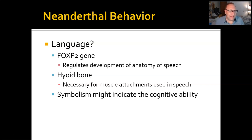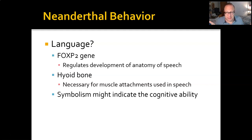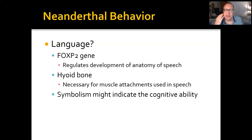Direct evidence is that they have a floating hyoid bone like ours. You need that hyoid bone for muscle attachments that control the larynx and allow you to make the range of sounds that you do. The other key piece of evidence is they have a version of a gene called FOXP2, which regulates the anatomical and neurological development of speech. They have the same version modern Homo sapiens have. No other mammal has this, as far as we know — we are the only two. Language requires a whole set of changes to the anatomy of the cranium, the chest, and the throat.